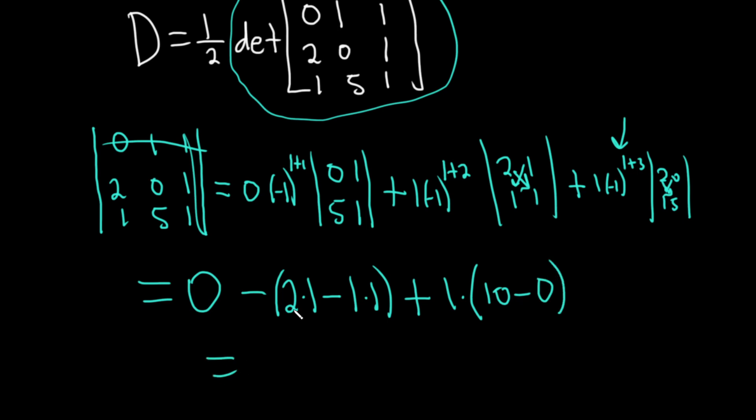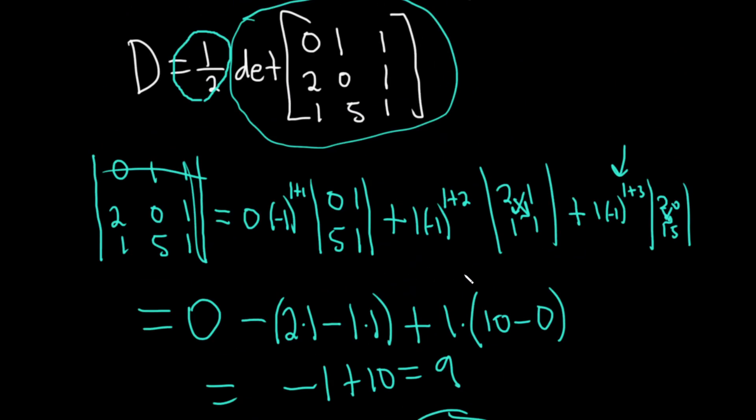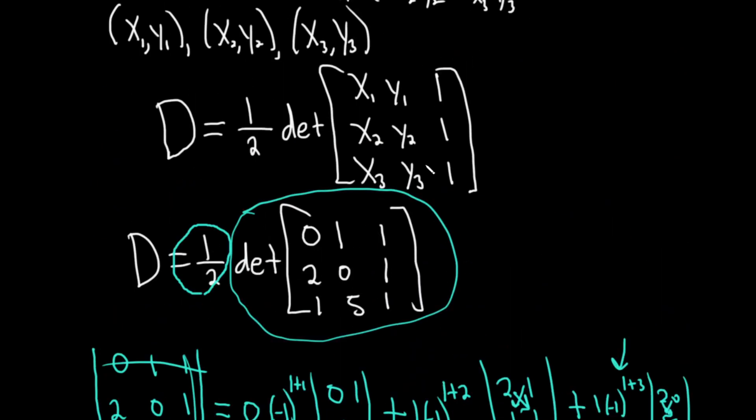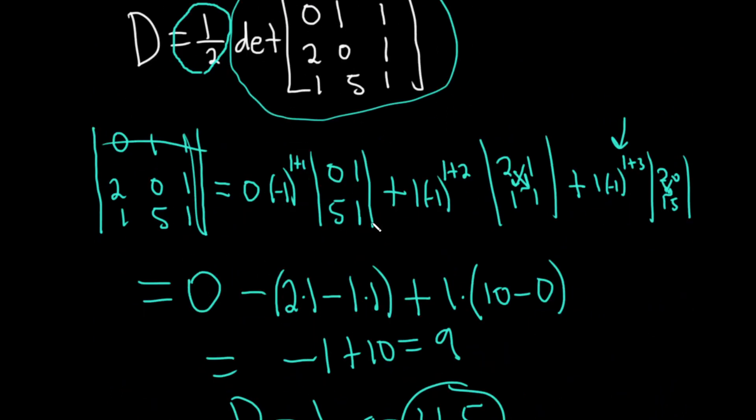So this is equal to negative 2 minus 1, so this is negative 1 plus 10, which is equal to 9. But that's not the answer. We have the one half on the outside. Did this pretty quickly. Hopefully it made some sense. So it's one half times 9. So the area of the triangle is 4.5. So basically, I kind of rushed through the determinant computation, but all you do is apply this formula. And a good tip, I guess, is to leave the one half out until the end. And here I expanded across the first row. I hope this has been helpful. Good luck.